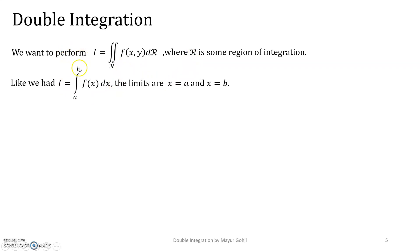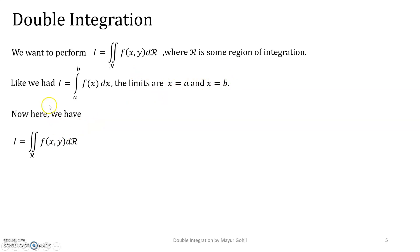Like we had the first integral — the definite integral we have studied — it is an integral from a to b of f dx, with limits from x equals a to x equals b. In the same way, we will have the double integral of f(x, y) dr over the region of integration R.